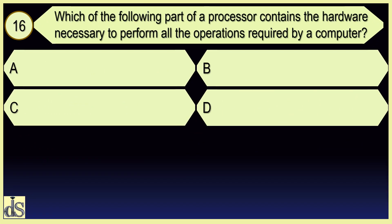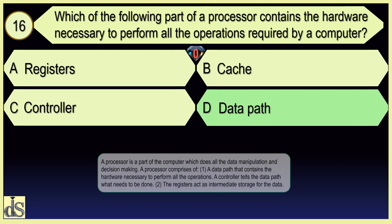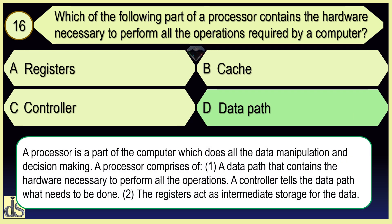Which of the following part of a processor contains the hardware necessary to perform all the operations required by a computer? DATA PATH.